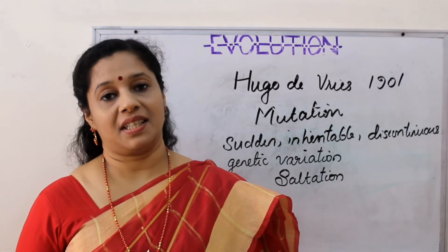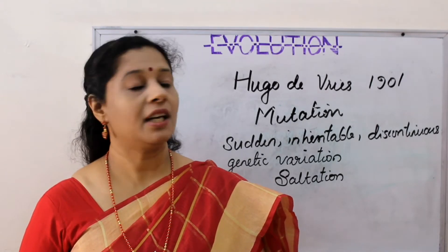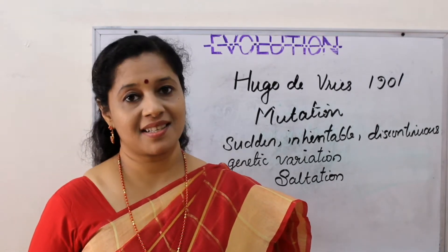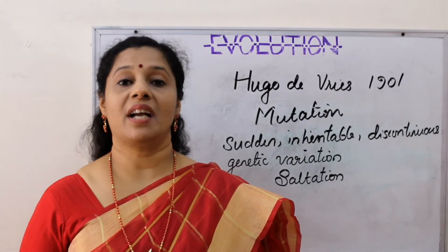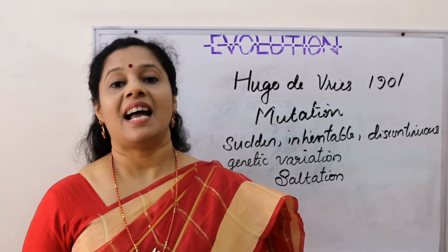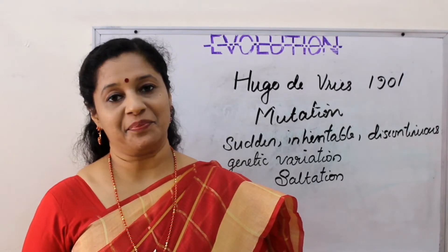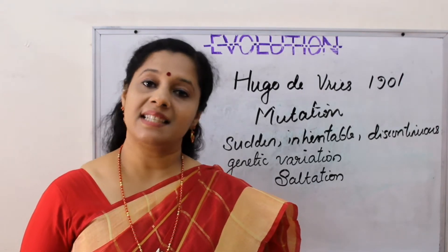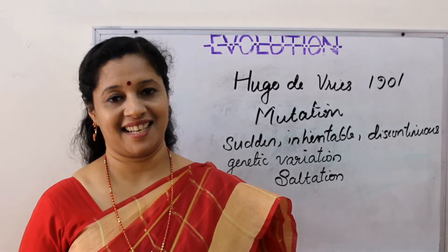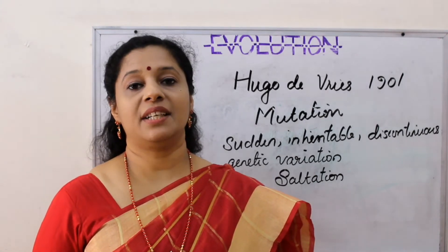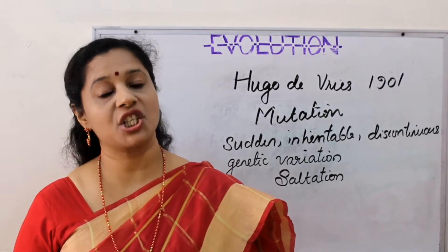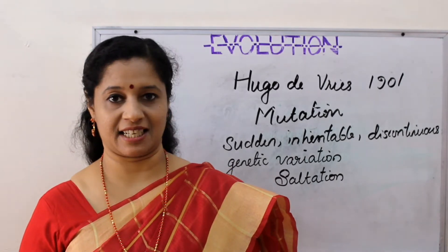After Darwin, the post-Darwinian theory is by Hugo de Vries, who was a Dutch botanist and he proposed his theory on evolution in the year 1901. According to him, the driving force behind evolution is mutation. When Darwin said it was a slow gradual directional process called natural selection.